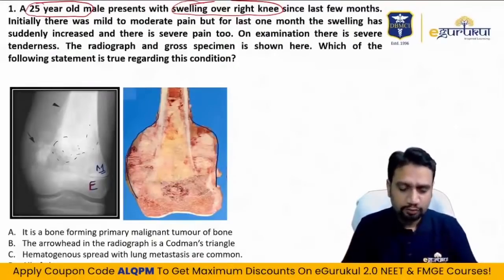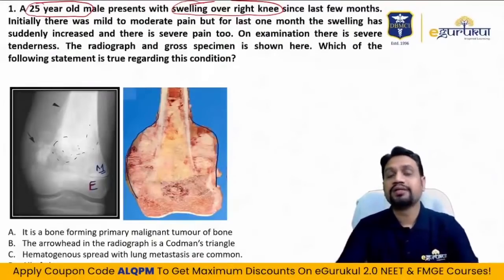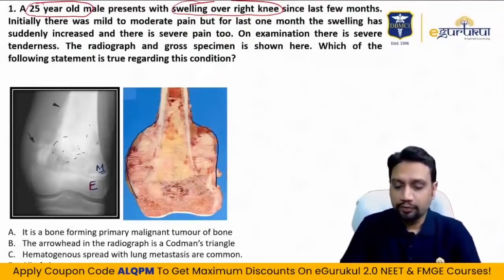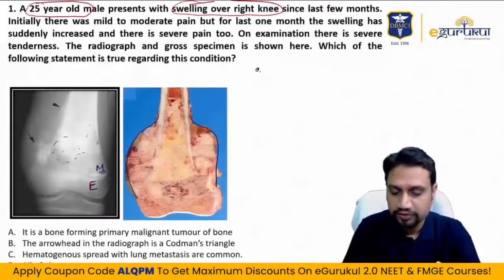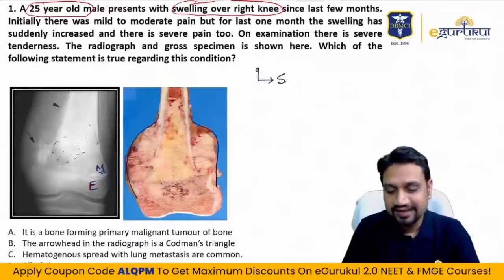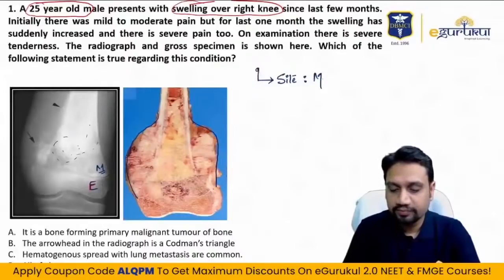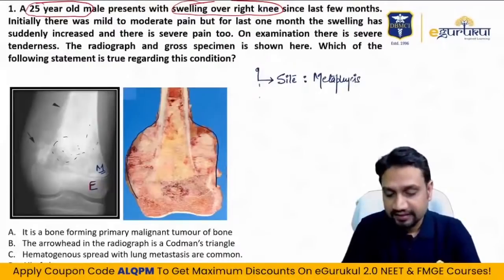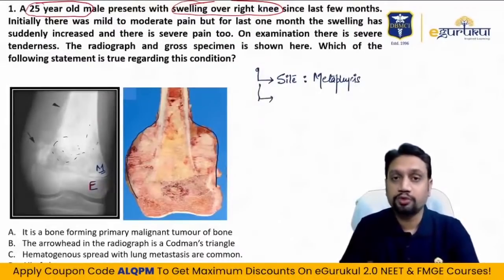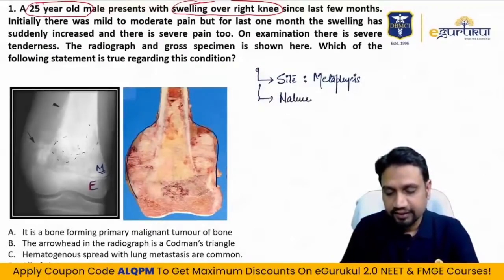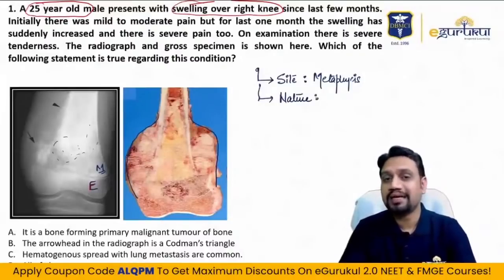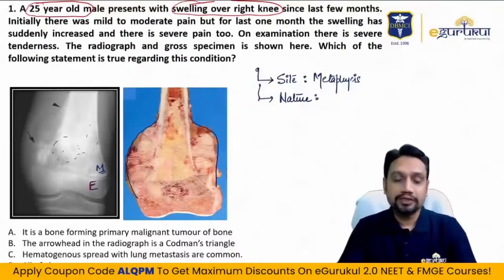Whenever suspecting a tumor, always go in sequence. First, see the site involved — here it is metaphysis. Second, find out the nature of the tumor: is it benign, benign with malignant potential, or malignant? Here we have features of malignancy.